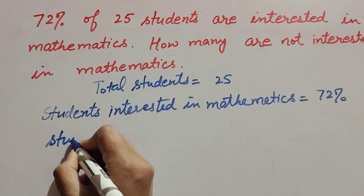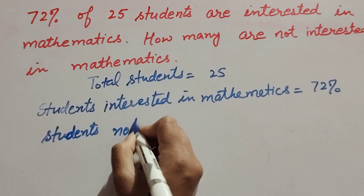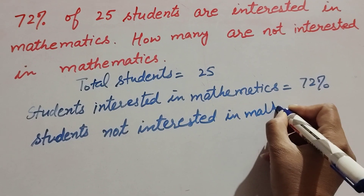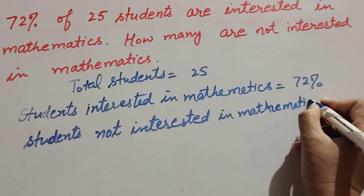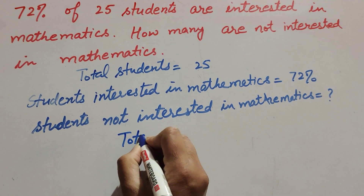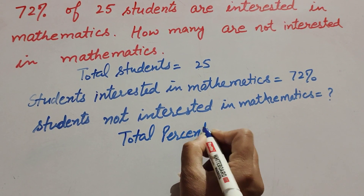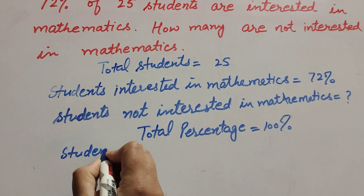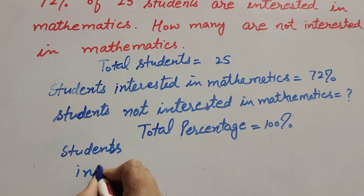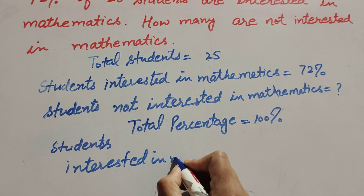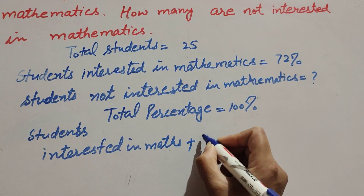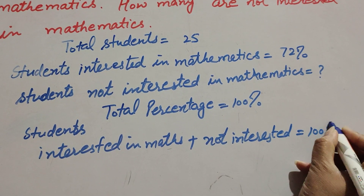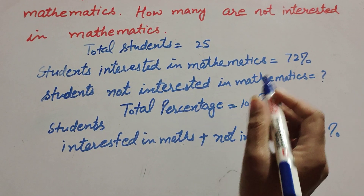We need to find the students not interested in mathematics. The total percentage of students is equal to 100 percent. So: students interested in mathematics plus students not interested in mathematics equals 100 percent. Students interested in mathematics is 72 percent, plus students not interested equals 100 percent.